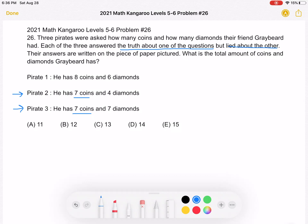If we assume that they're both lying about the number of coins, then that means they must be telling the truth about the number of diamonds. But we see that pirate 2 says he has four diamonds, and pirate 3 says he has seven diamonds, and four is not equal to seven. So that means those two statements regarding the diamonds cannot both be correct. They cannot both be the truth.